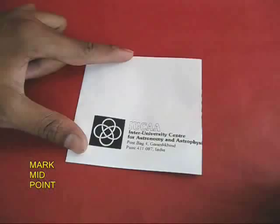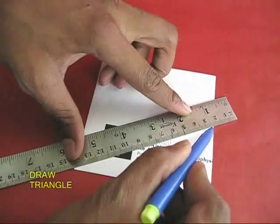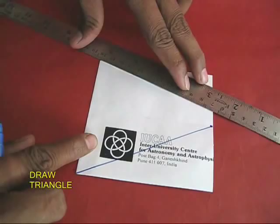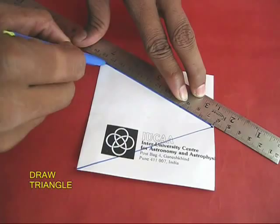Now double the envelope to locate the midpoint of the open end. Mark it with a sketch pen and then draw lines from this midpoint to the opposite corners. These two blue lines would be exactly the same size and this way you will make an isosceles triangle.